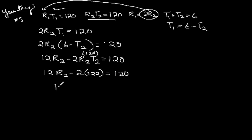And we're going to get 12R2 minus 240 equals 120. Add 240 to those sides, so we get 12R2 equals 360. This will be nice where it comes out nicely. 12 goes into 36 three times, so R2 equals 30.